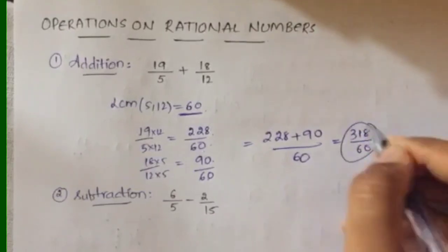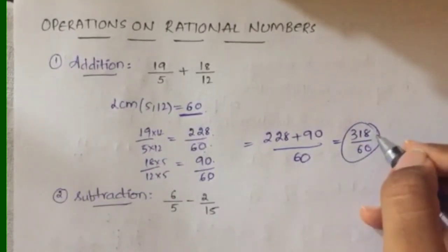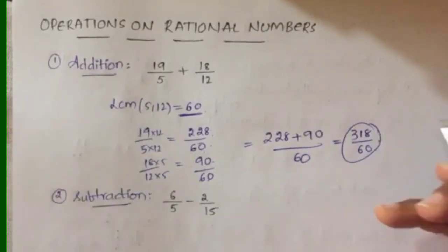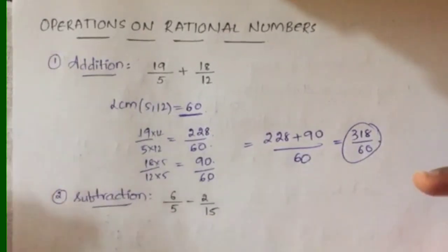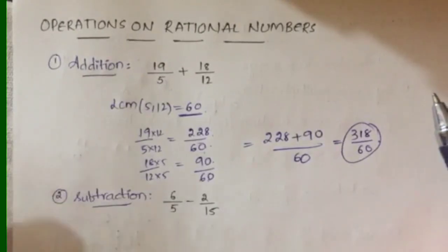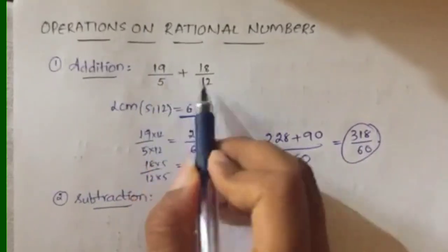Since the denominators are the same, you can add directly: 228 + 90 = 318, so the answer is 318/60. You can still simplify 318/60 since it's divisible by 3, but it is your choice — it is not mandatory. You can simplify it or keep it as it is. That's addition of rational numbers: first make the denominators the same.